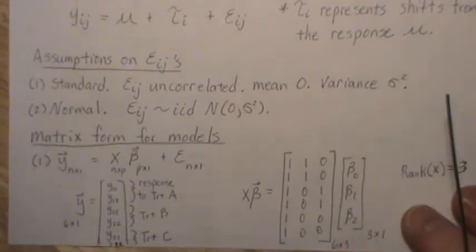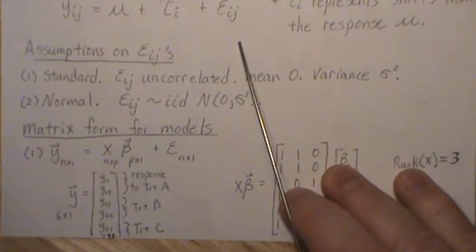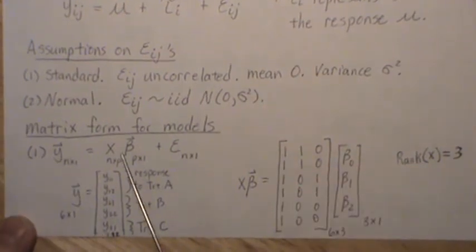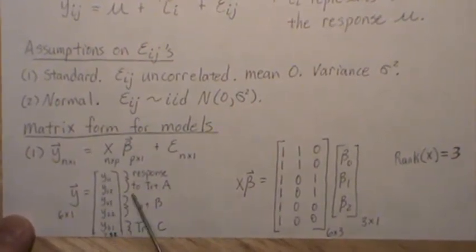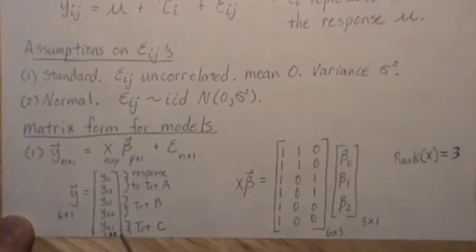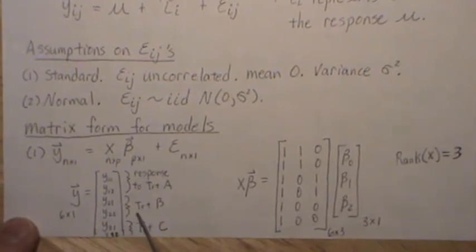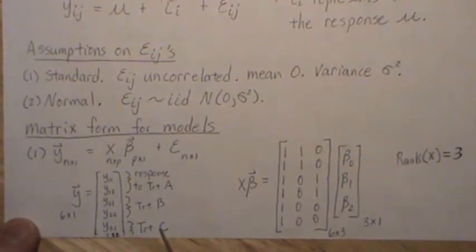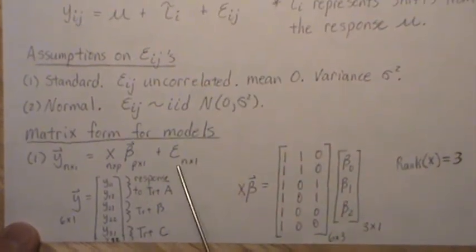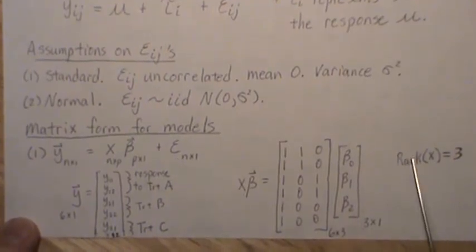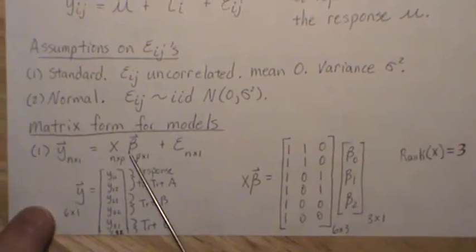The matrix form for these models is this. In all of them, it's this form right here. And so the y vector is pretty simple. It's just the y observations, and we group them, say treatment A, treatment B, and treatment C. So here, we're assuming two observations in group A, two observations in group B, two observations in group C. And this is the same, no matter what model we use. The error terms is going to be the same, it's going to be a vector of errors. And it's really this design matrix and the beta parameters that are different.